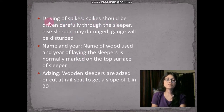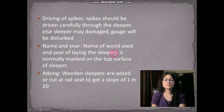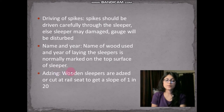Driving of spikes should be done carefully through the sleepers, as wood can be easily damaged, which can disturb the gauge. The name of the wood used and the year of laying the sleeper is normally marked on the top surface. Wooden sleepers are edged and cut to get a slope of 1 in 20.